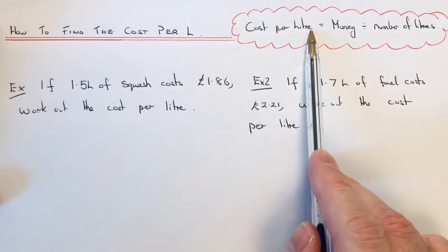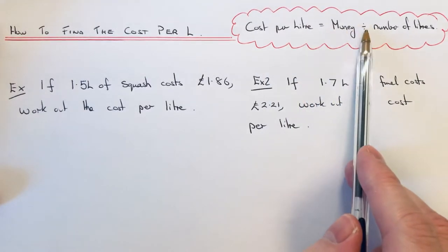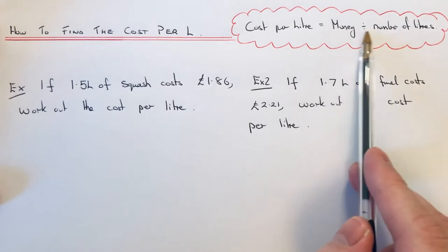So the cost per litre is equal to the money divided by the number of litres that you are buying.